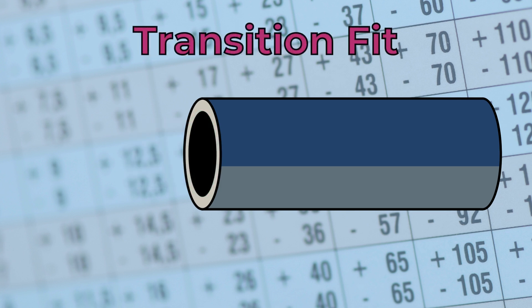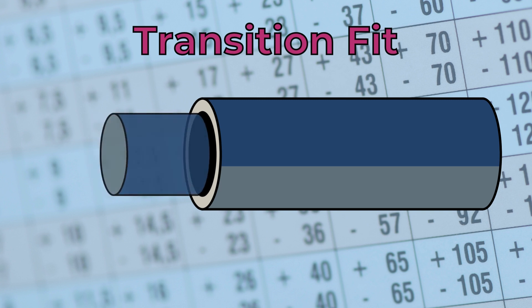A transition fit is a type in which the shaft may be slightly smaller or larger than the hole before assembly. It is used to create a tight and secure connection between them in applications requiring high precision and stability.